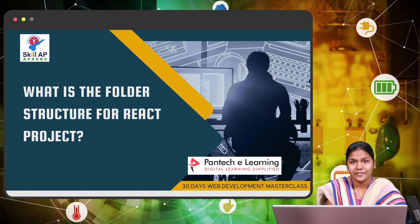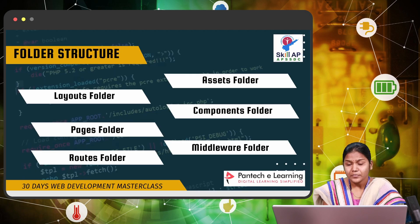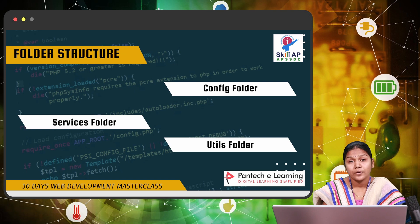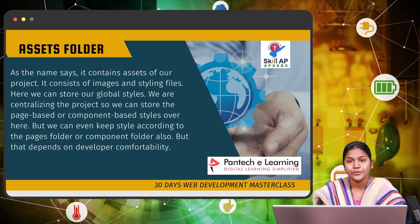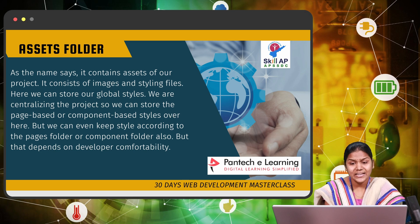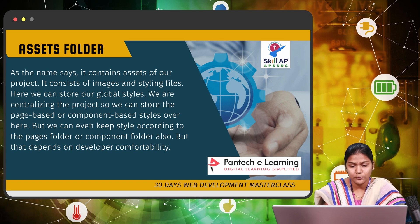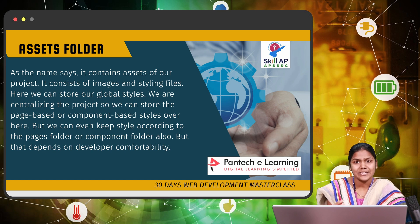Now here comes our folder structure. The folder structure for a React project includes: assets folder, layout folder, components folder, pages folder, middleware folder, routes folder, configuration folder, services folder, and utils folder. The assets folder contains assets of the project — images and styling files. We can store global styles here, centralizing the project. We can also store page-based or component-based styles here, depending on developer preference. The layout folder contains layouts available to the whole project like header and footer — the basic layout of the complete web application.